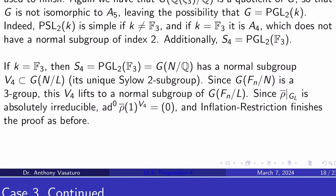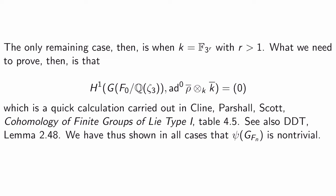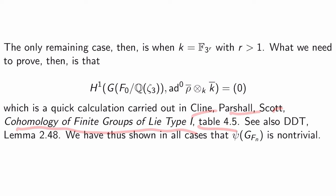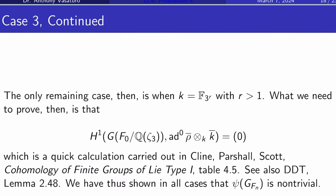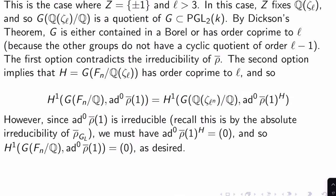The only remaining subcase is G = PGL_2(K) with K = F_{3^r} for r > 1. What we need to prove is that H^1(Gal(F_0/Q(ζ_3)), ad^0 rho-bar ⊗ K-bar/K) is trivial. This is a calculation carried out in Kleidman-Liebeck 'The Subgroup Structure of the Finite Classical Groups,' Table 4.5. You can also see Diamond-Flach-Guo Lemma 2.48. If this is trivial, then H^1(Gal(F_N/Q), ad^0 rho-bar(1)) is trivial, which is what we've been trying to prove in all three cases.